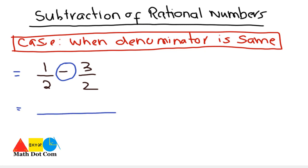Just you have to take the LCM of the denominator. LCM of denominator 2 and 2 is 2. So the LCM is 2 and we have to just subtract the numerators. That is 1 minus 3. That you will get minus 2 by 2 and it will be cancelled out and that you will get is minus 1. So this is how you can subtract the two rational numbers when the denominator is same.